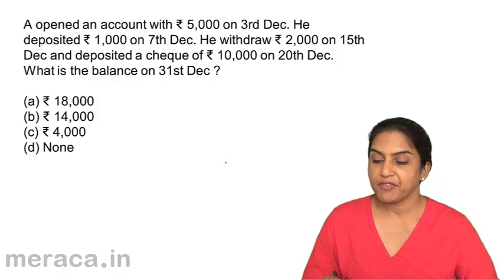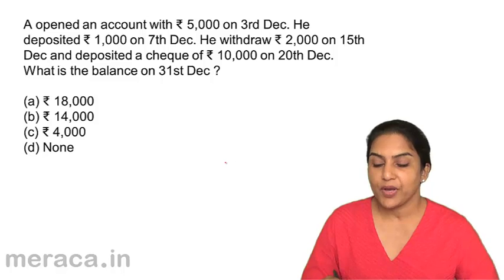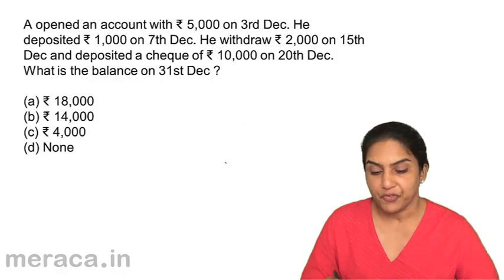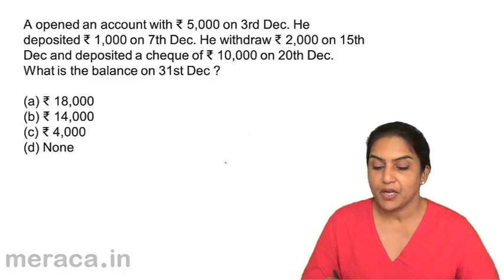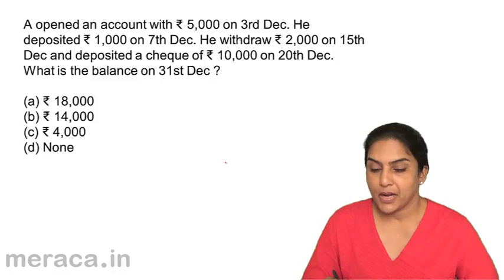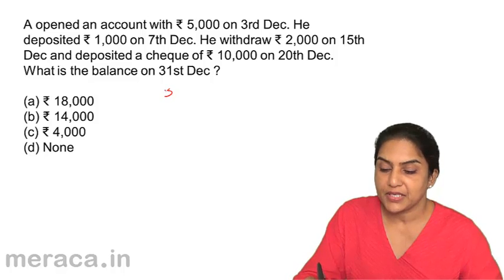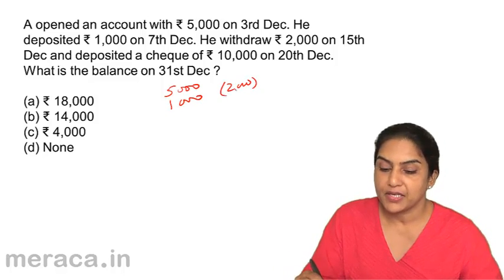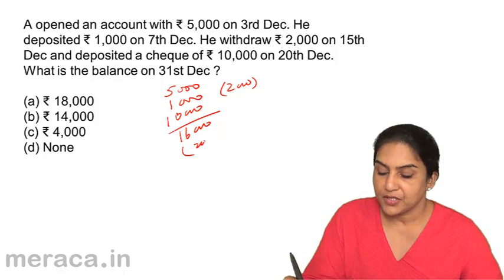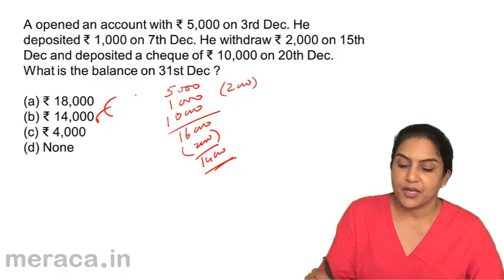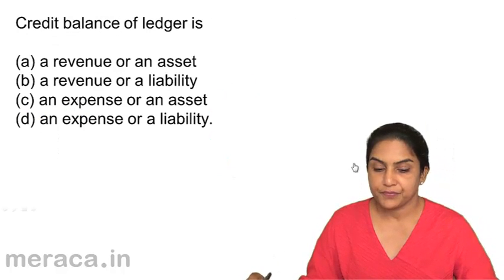Question 11: A opened an account with $5,000 on 3rd December, deposited $1,000 on 7th December, withdrew $2,000 on 15th December, deposited a check of $10,000 on 20th December, and deposited $2,000 on 25th December. What is the balance on 31st December? We can do it mathematically: $5,000 + $1,000 + $10,000 + $2,000 = $18,000 minus $2,000 withdrawn = $16,000 minus $2,000 = $14,000. Correct answer: $14,000 credit balance.